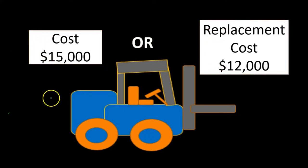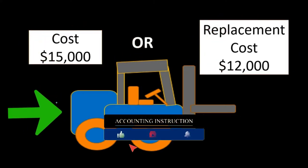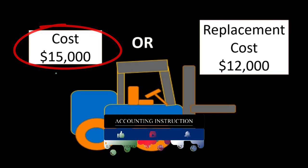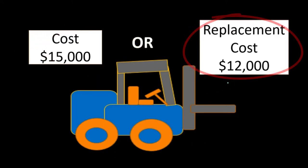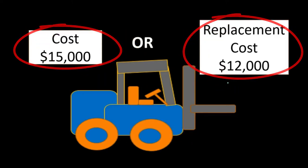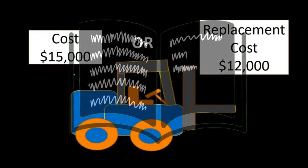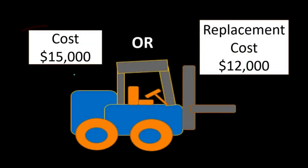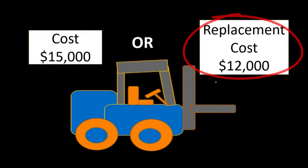For example, if we buy and sell forklifts and they are our inventory — not equipment we use, but merchandise we sell — and we bought that forklift for $15,000 but the replacement cost is only $12,000, then we're saying it went down in value. We shouldn't be keeping the inventory on the books at $15,000, which is the general default rule of recording inventory at cost, if the replacement cost has gone down to $12,000.